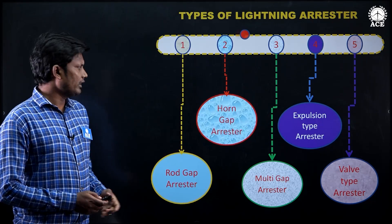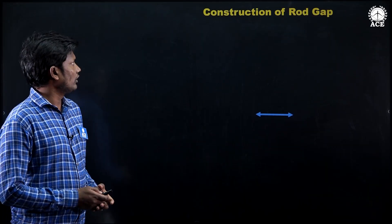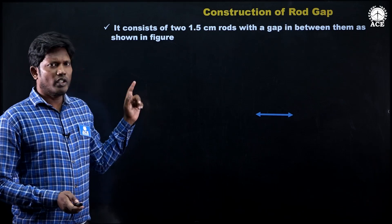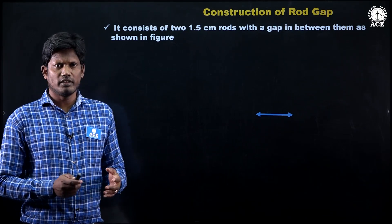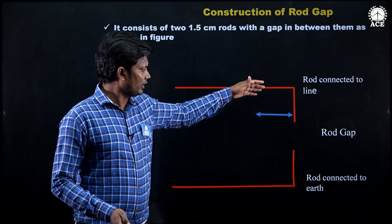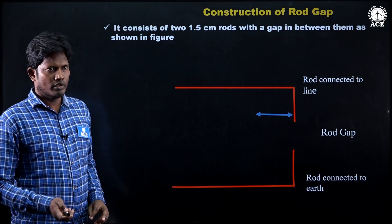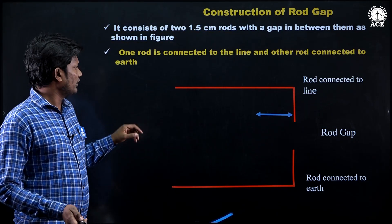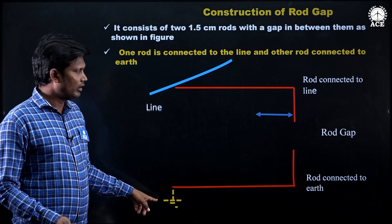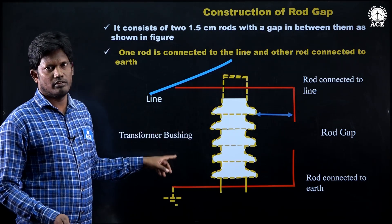The first one is rod gap arrestor and the second one is horn gap arrestor. Now the construction of rod gap arrestor: it consists of two 1.5 centimeter rods with a gap between them as shown in the figure. This is rod 1 and this is rod 2, and between them the gap is there. One rod is connected to the line and the other rod is effectively grounded in order to protect the insulators which are placed on the transformer bossing.